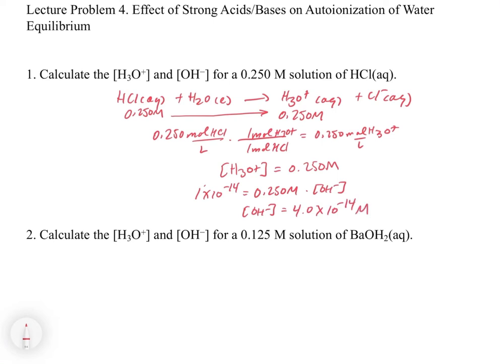And so what we see is that we get a stoichiometric conversion of the strong acid to H3O+. Now let's look at a slightly different example. So in this case, we have 0.125 molar of barium hydroxide. Now this one is a little bit interesting. Well, first of all, it's a base.